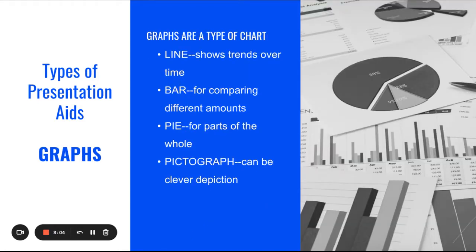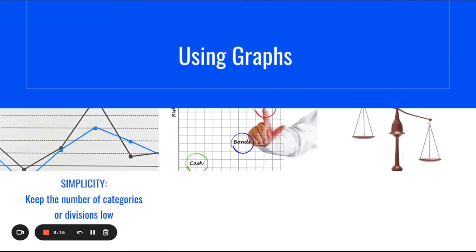Graphs are a type of chart. You can have a line, a bar, a pie, or a pictograph. All of these things break down your data in a really easy-to-interpret visual representation. So using graphs, simplicity is important. Keep the number of categories or divisions low. Easy to understand. Colors, clarity, and distinctions are very important.